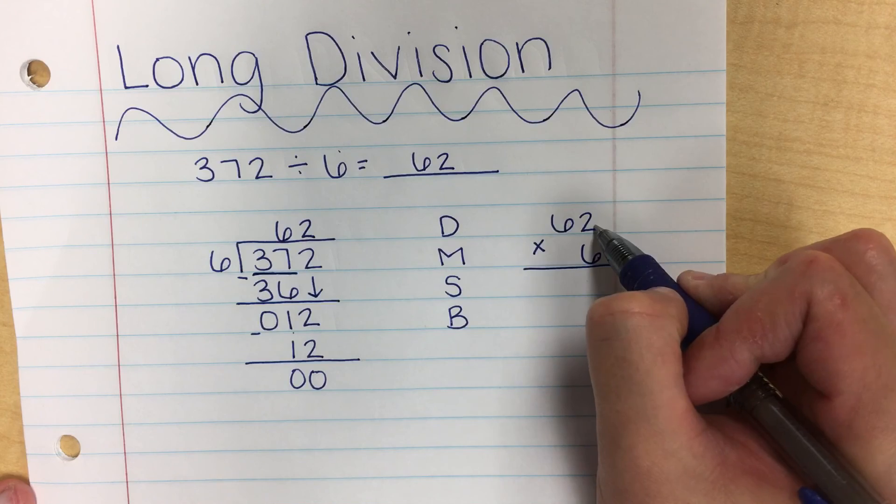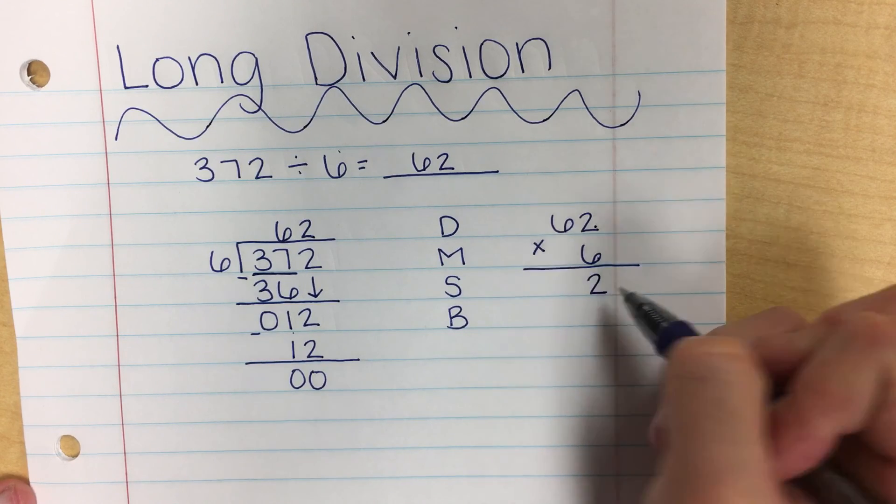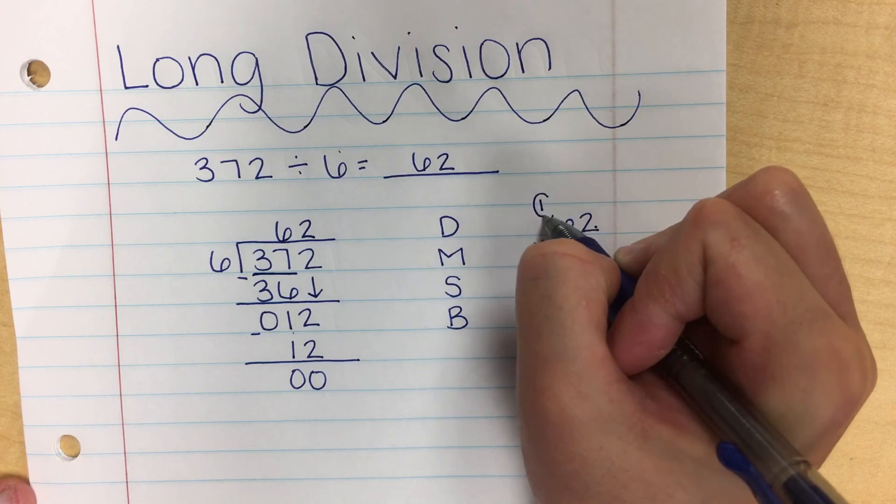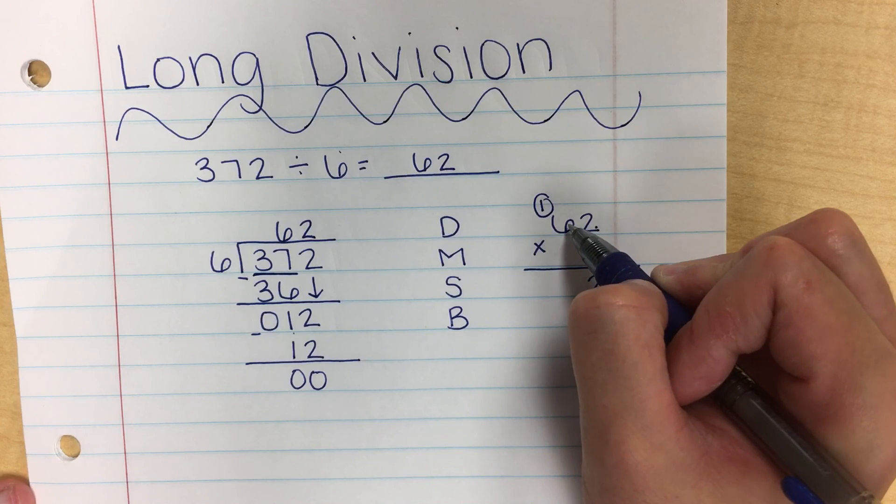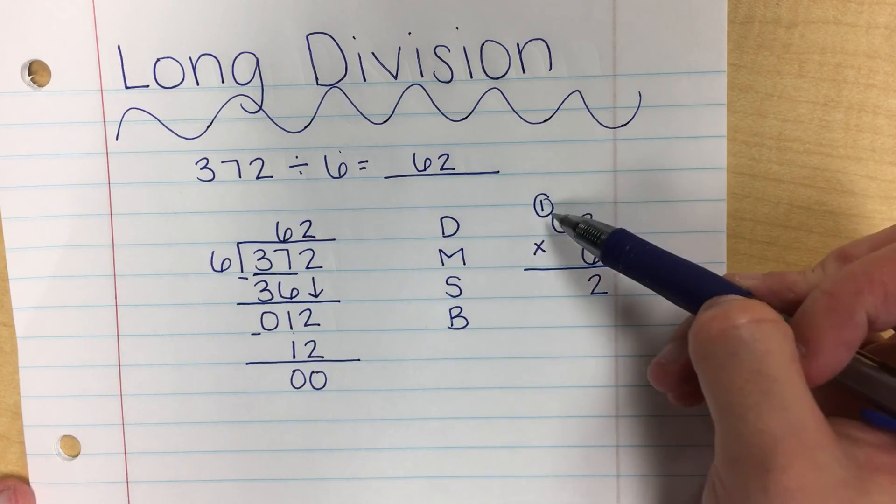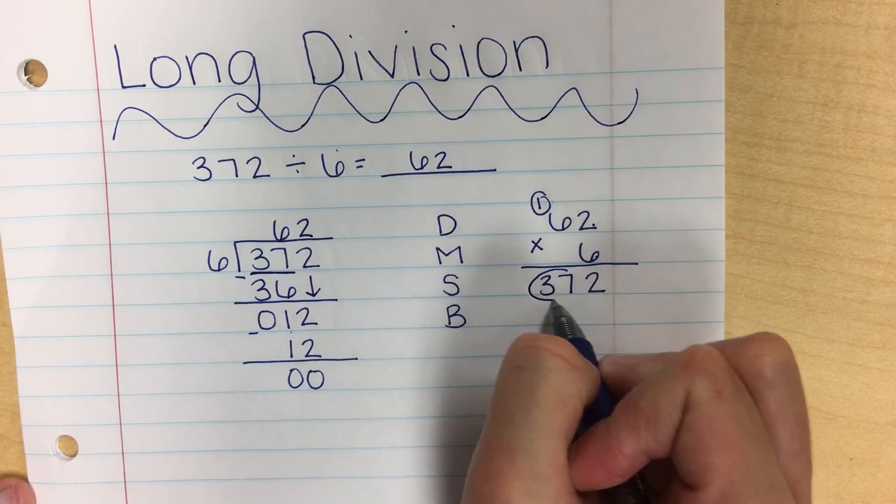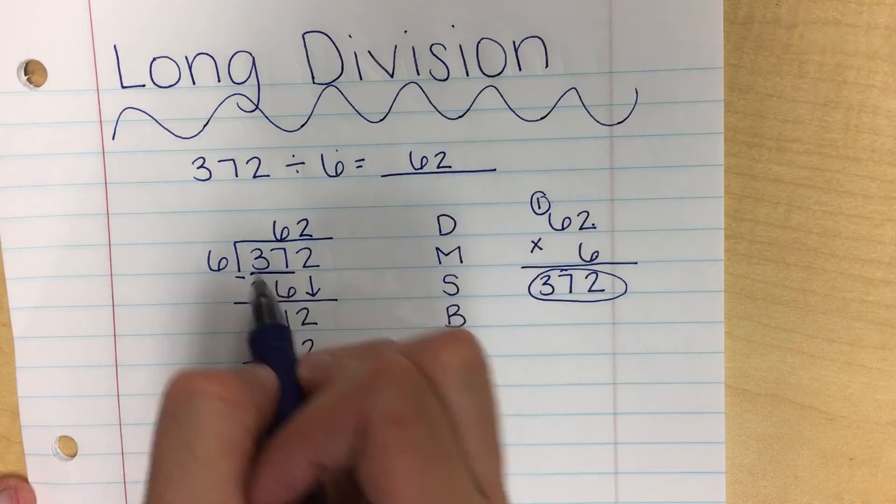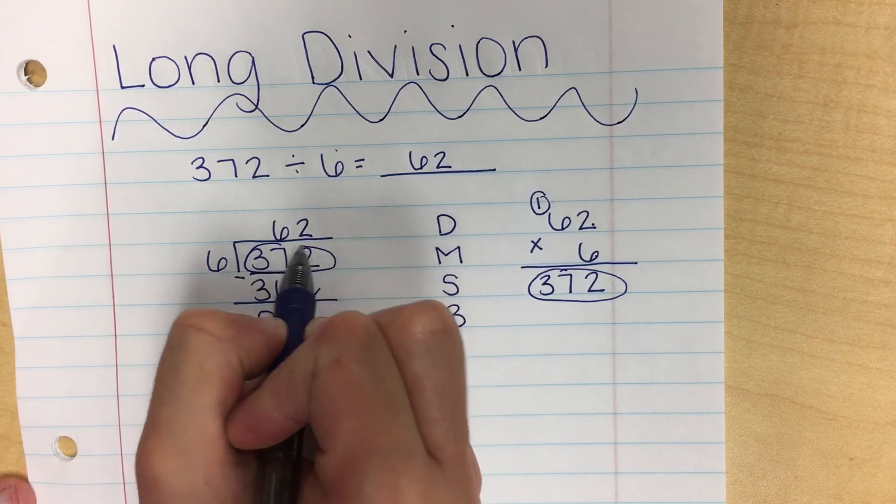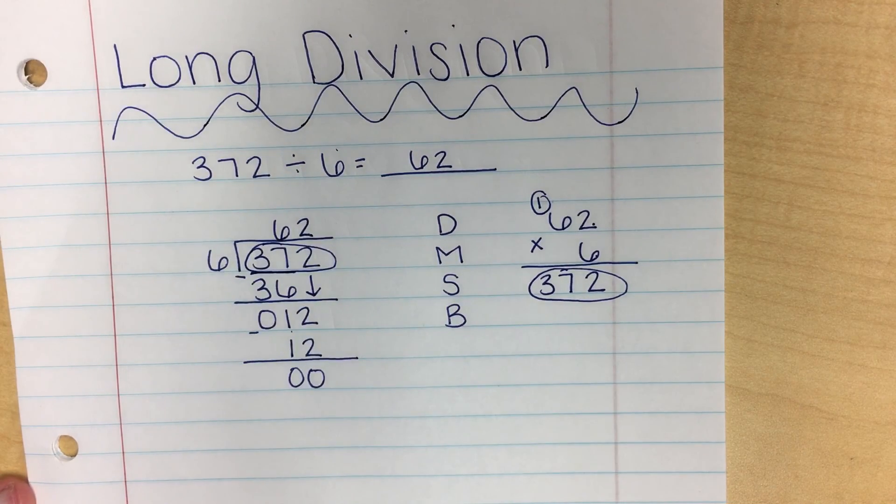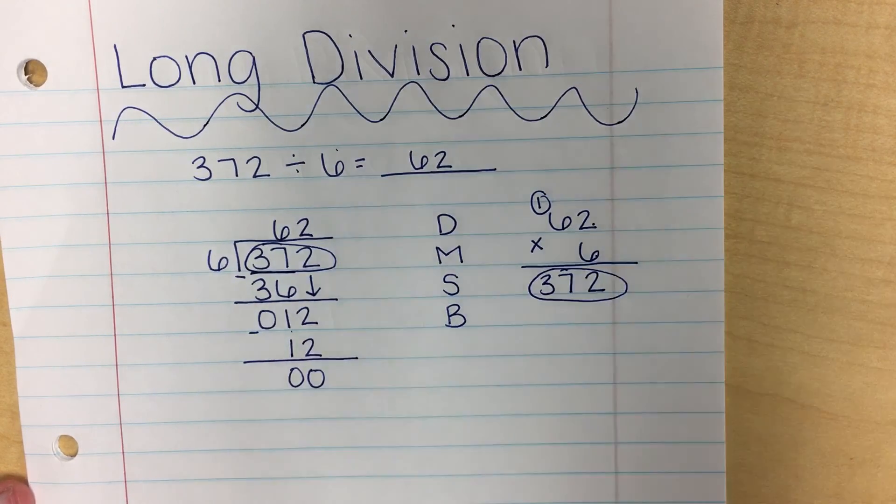6 times 2 is 12. I put my 2 here and I carry my 1. 6 times 6 is 36. Plus 1 is 37. The answer here matches the number that's under the box, matches our dividend. So I know that my answer is correct.